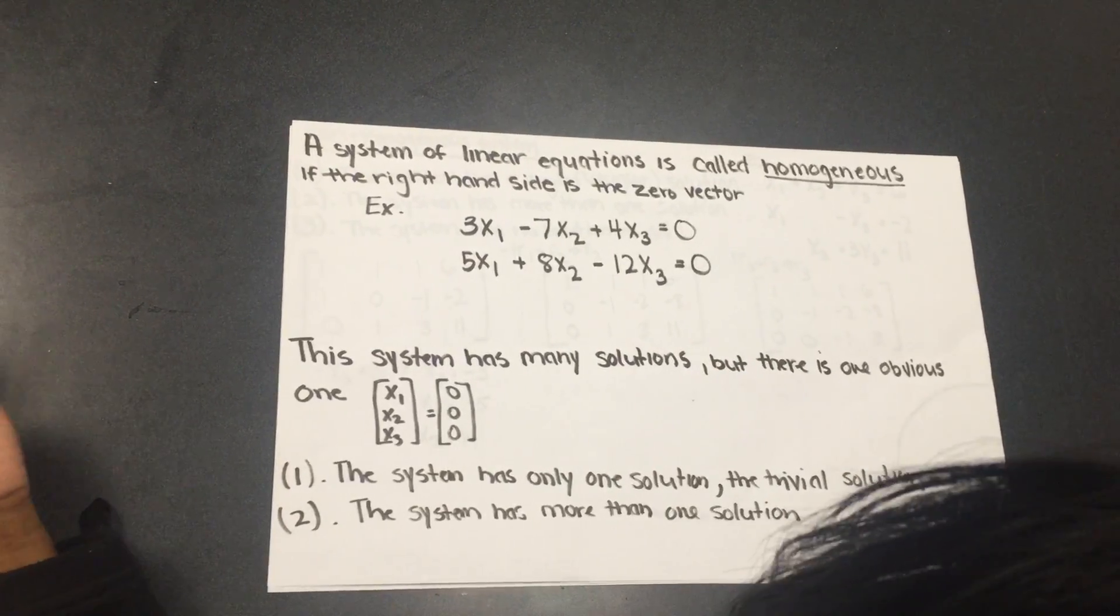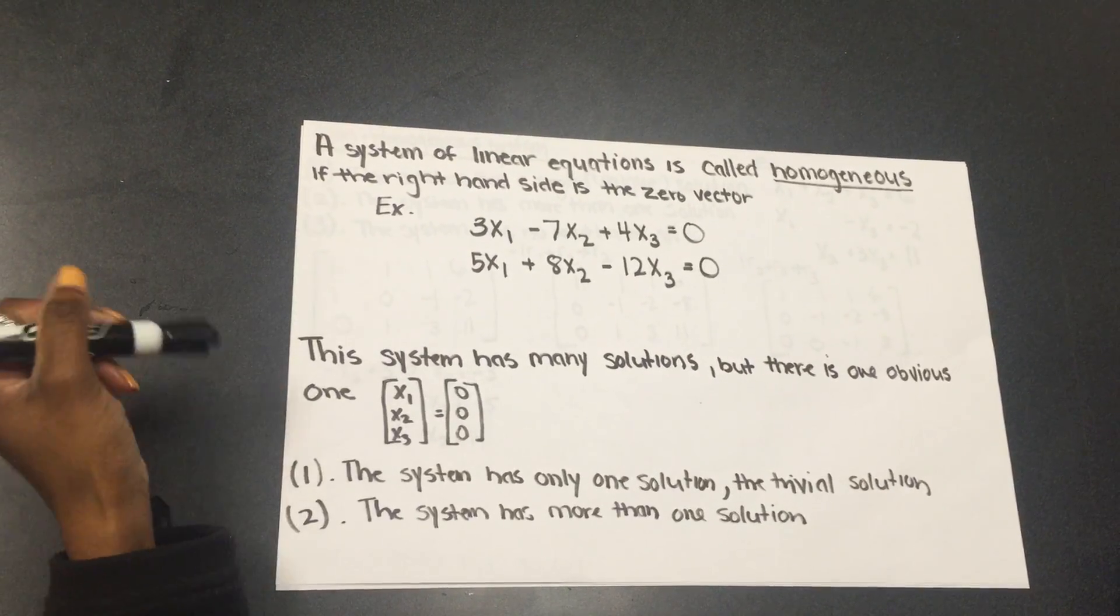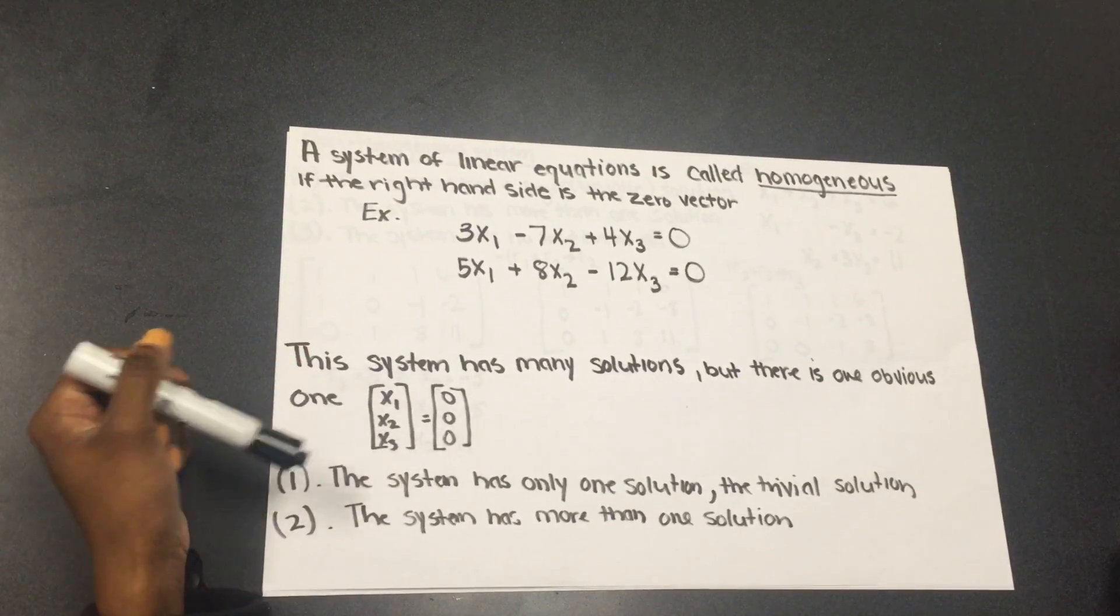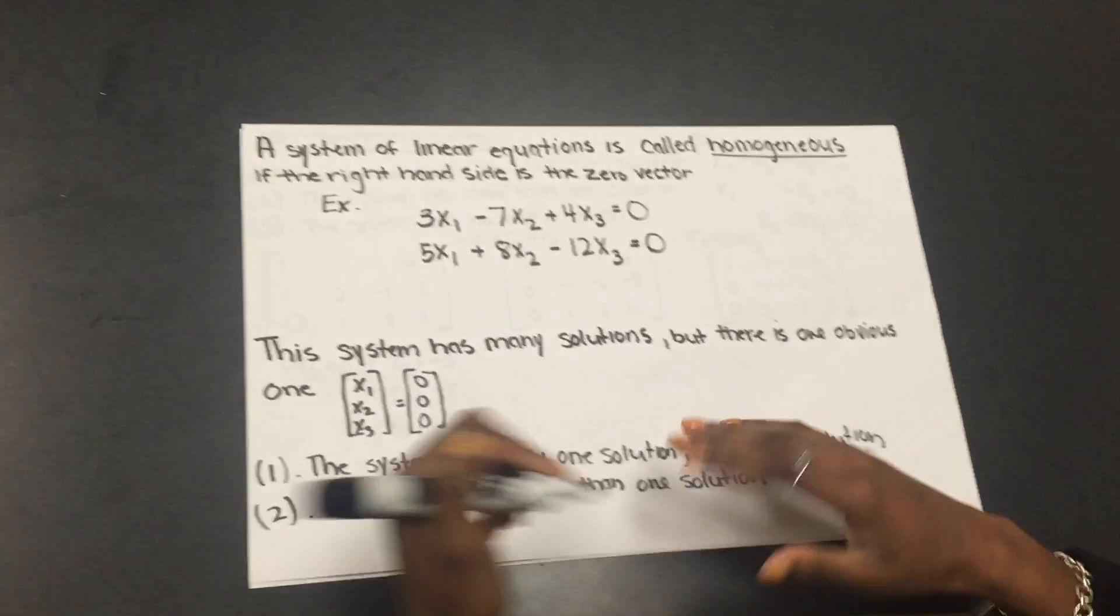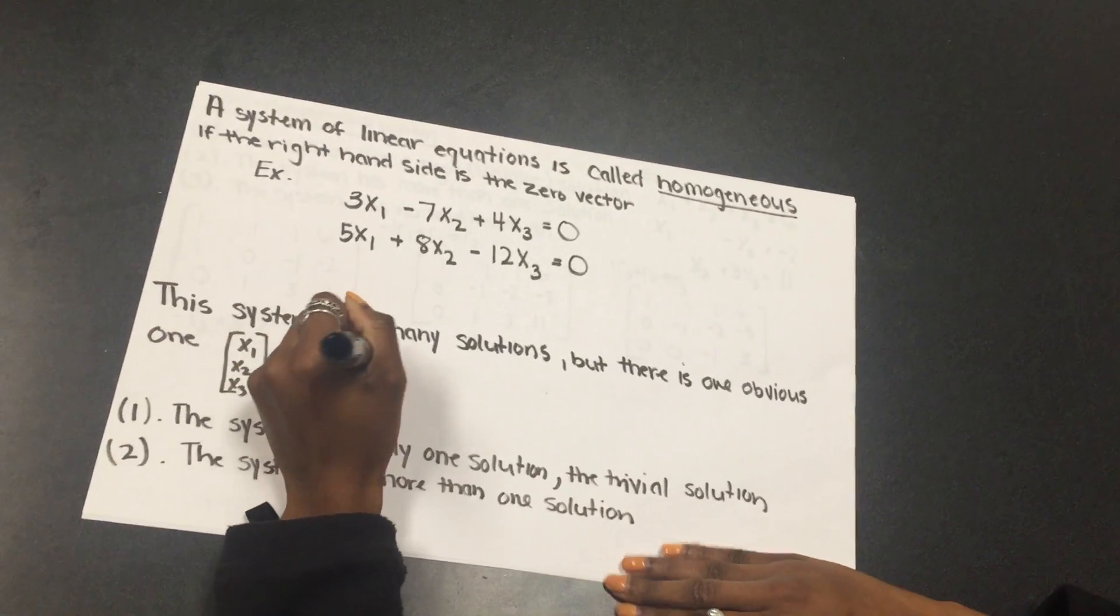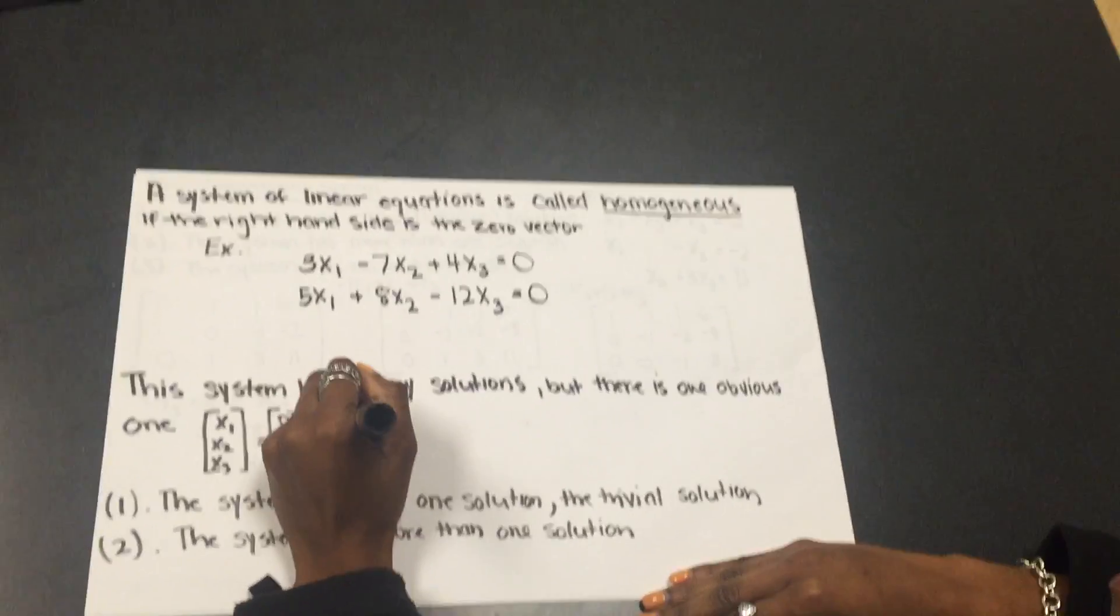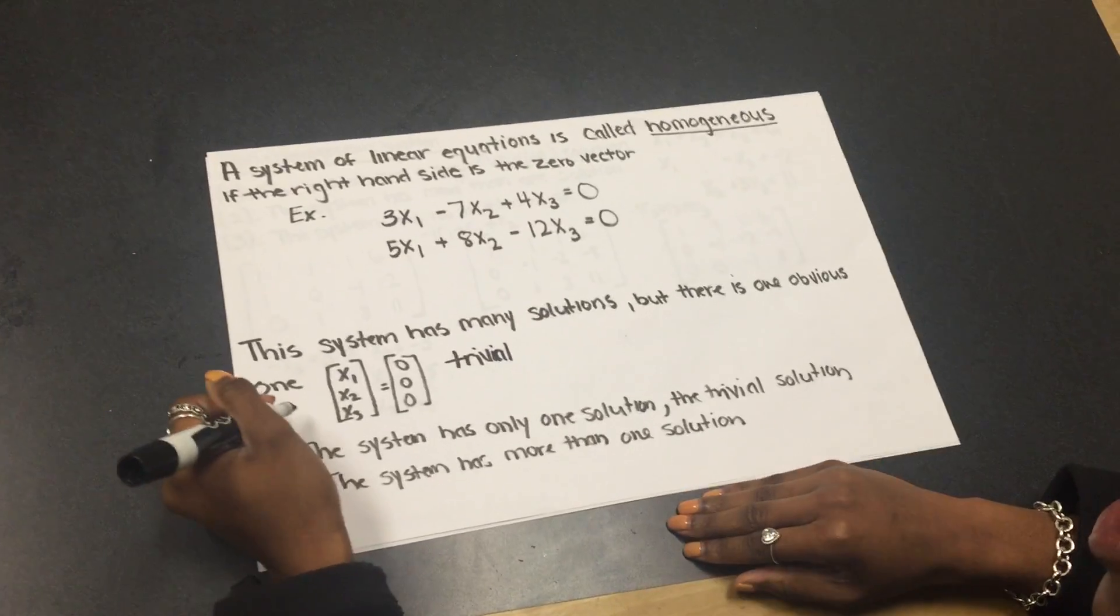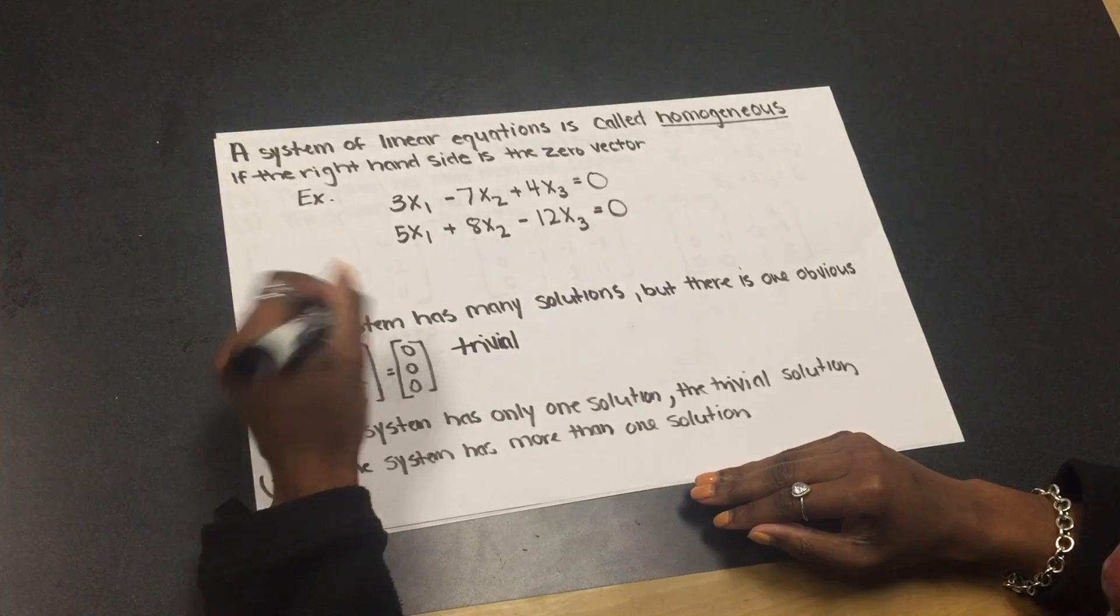Of course, this system has many solutions, but there is one obvious one, and that's x1 is equal to zero, x2 is equal to zero, x3 is equal to zero. A system has a trivial solution if it's a zero vector.